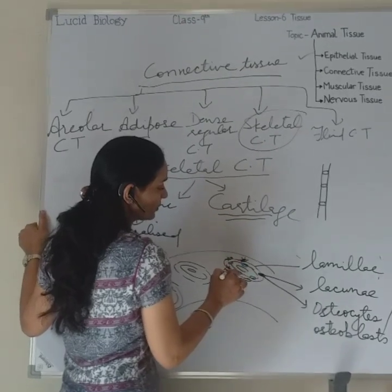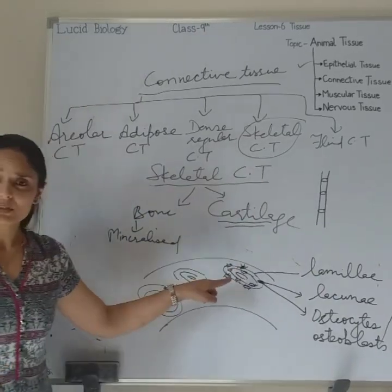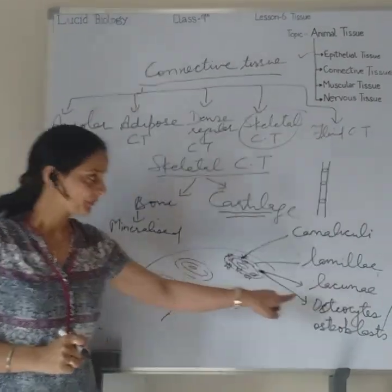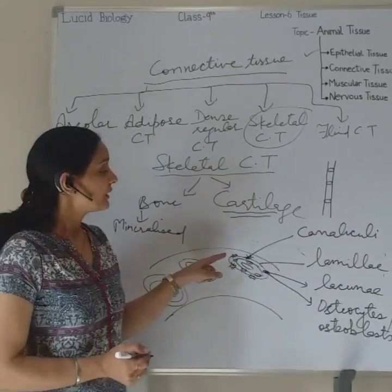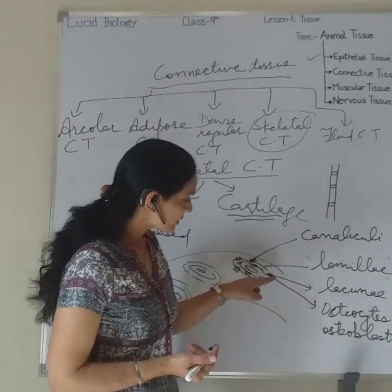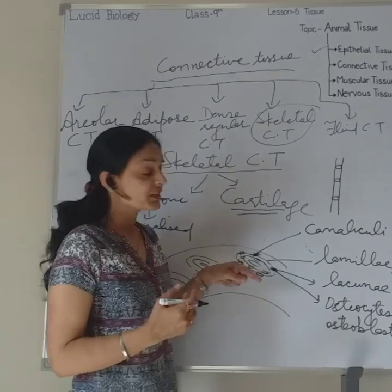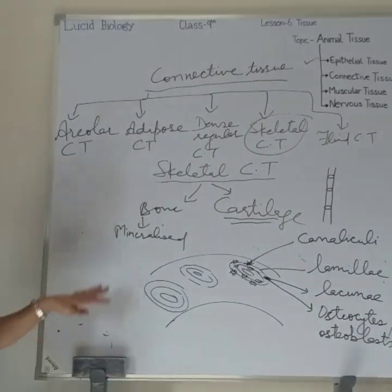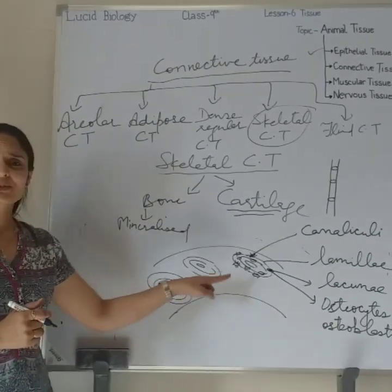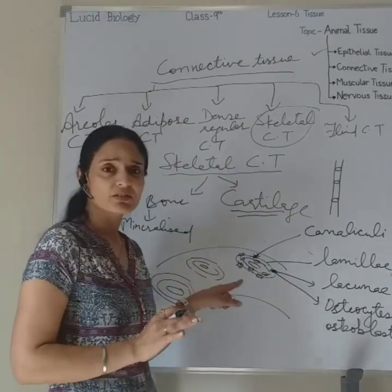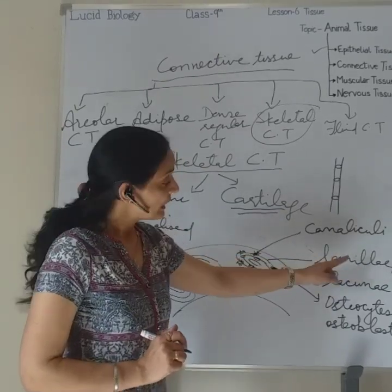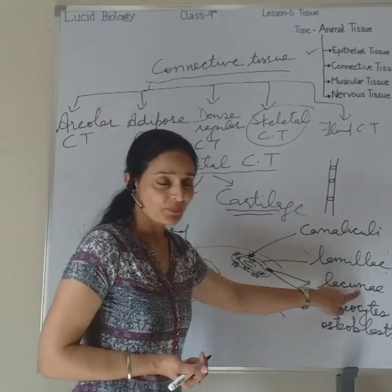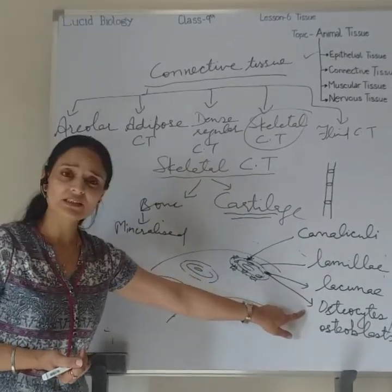The lacunae have a special network around them — thread-like structures called canaliculi. The canaliculi perform the special function of enabling bone cells within the lacunae to communicate with each other, receive nutrition, get oxygen, and eliminate waste. So: the matrix is arranged in rings called lamellae; in the lamellae are fluid-filled spaces called lacunae; and the bone cells inside are called osteocytes or osteoblasts.